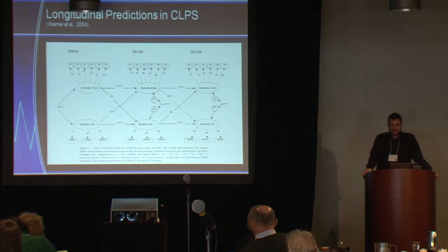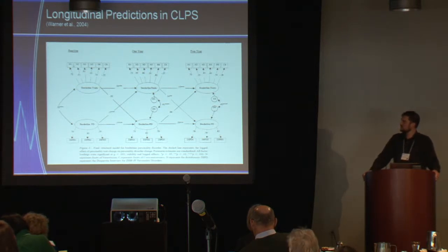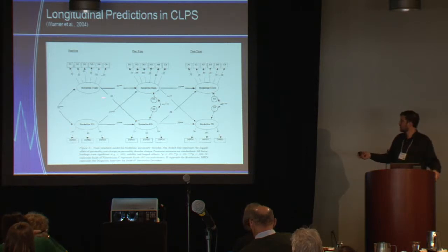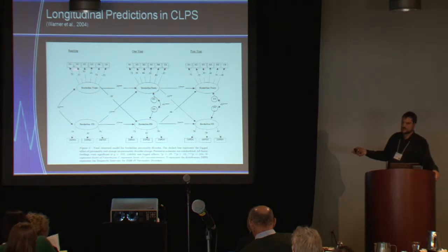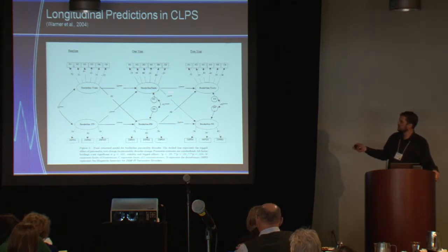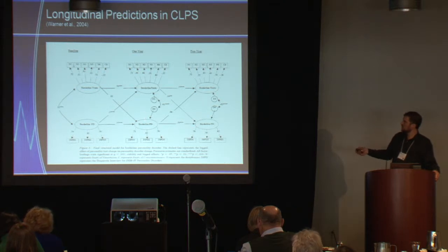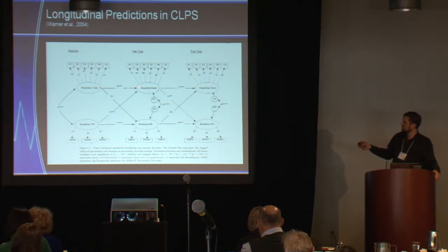There was a study in CLIPS which examined a longitudinal relationship using a cross-lag model. In this model — I want to go through this briefly — the top three circles reflect more or less neuroticism: five facets of neuroticism and one facet of conscientiousness, which has a fairly small loading. You could think of this as reflecting neuroticism by self-report on the NEO. Borderline personality disorder was assessed using the DIPD. These were assessed at baseline, one year later, and two years later. The important coefficients from this model are the stability coefficients.